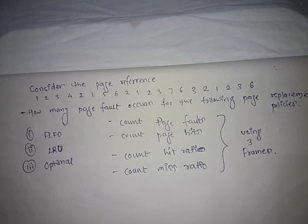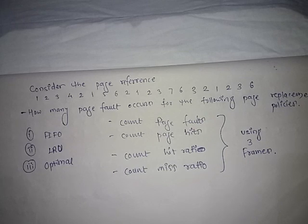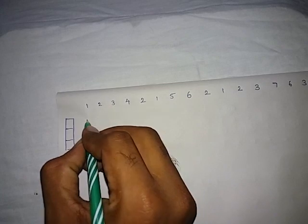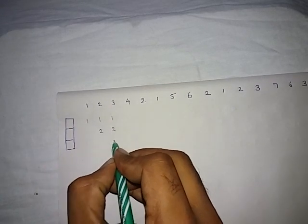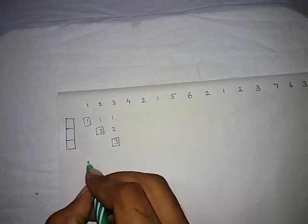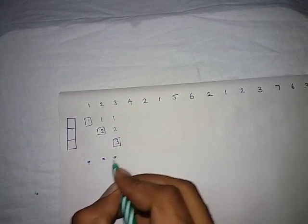The meaning of optimal is that there is no solution better than this — the page fault count is very low in optimal. The page reference string is given and three frames are here. We have to put the pages into the frames. The first three pages are loaded the same way for every algorithm when the frame size is three, so as we place those pages, page faults occur — the total count here is three.